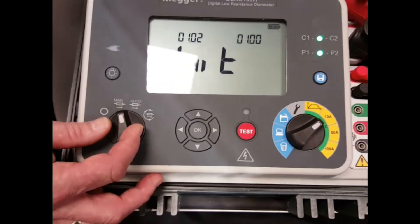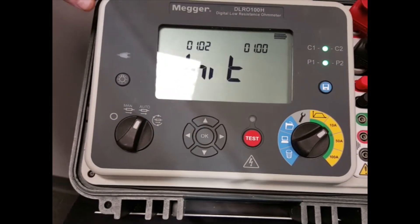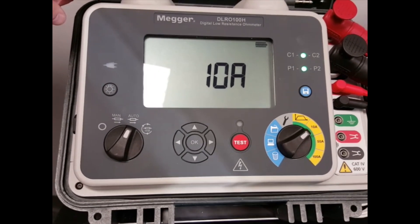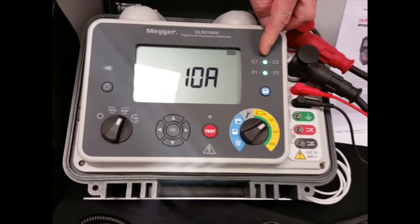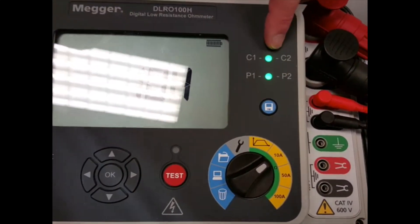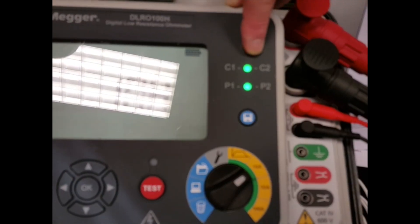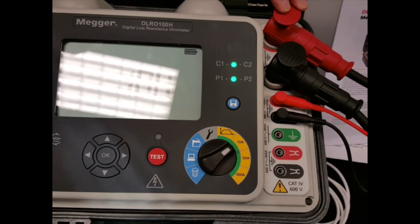In automatic over this side, this test is looking for continuity across the terminals. When you have continuity it will start the test. Here we have some indicators to let you know when you've got continuity. Now here we can see that we have continuity in the current circuit and we have continuity in the potential circuit.